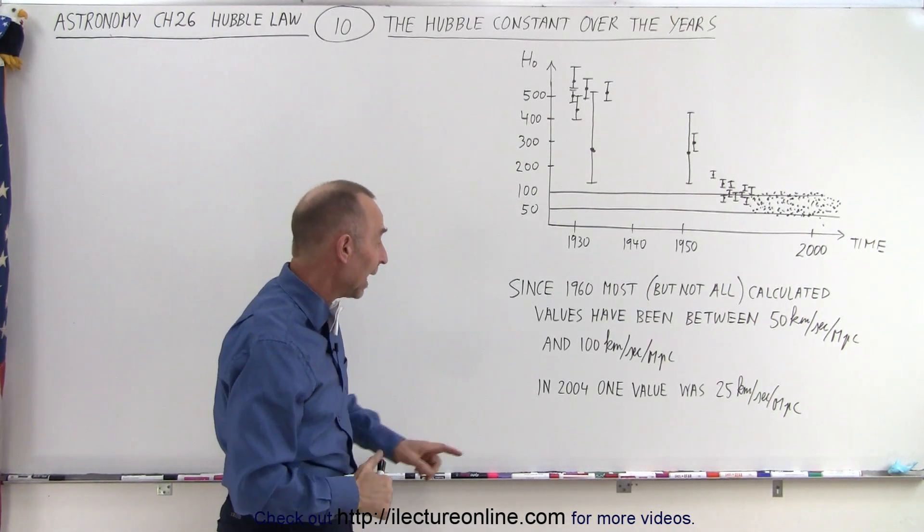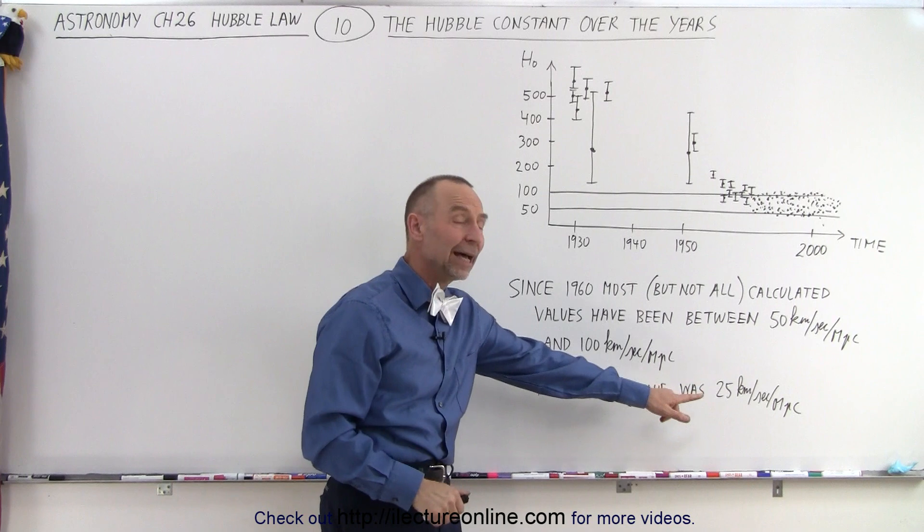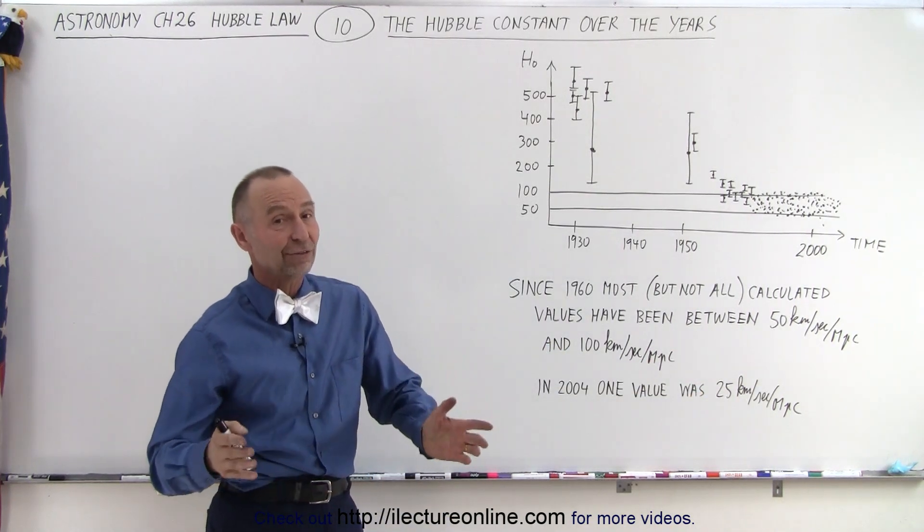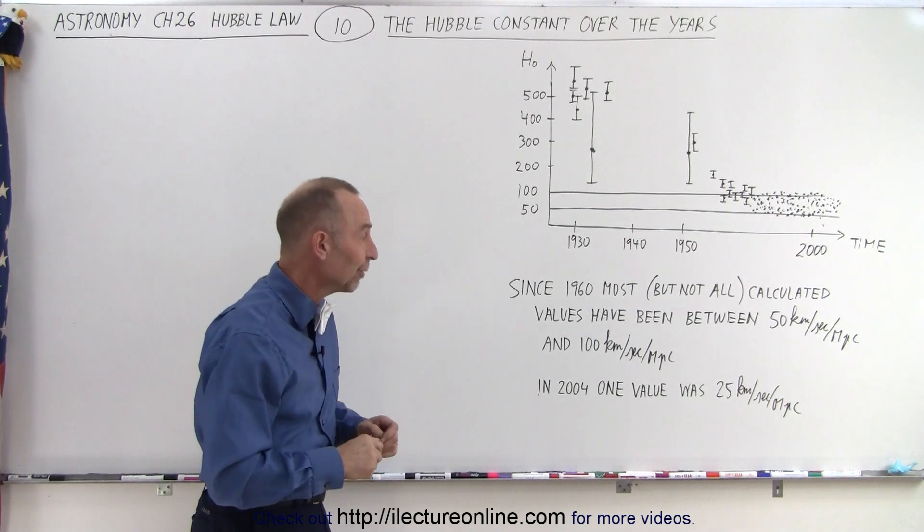Notice though that in 2004 one value came in at only 25 kilometers per second per megaparsec, and this was long after the Hubble had come back with all that great information.